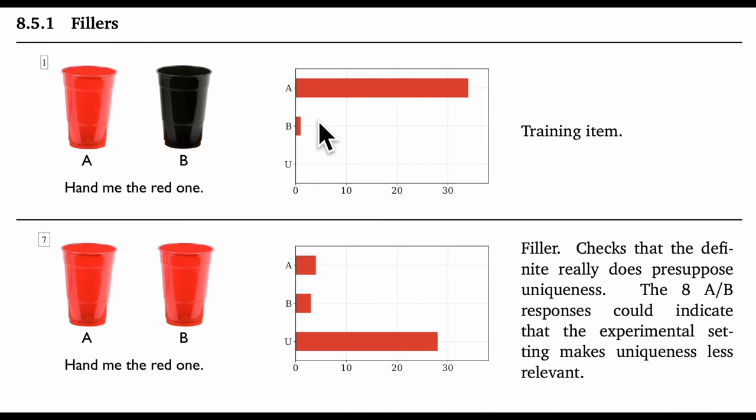So to start our review here, I had just two fillers as kind of warm-ups and also checks that the experiment was working as I expected. And the picture here looks good. For hand me the red one, and the display with one red and one black cup, everyone chose the red one. That's reassuring. The next filler is perhaps more important. Here the request is again, hand me the red one. And people did go for request unfulfillable. It's important that people are willing to do that for the experiment to work. So this is again quite reassuring.